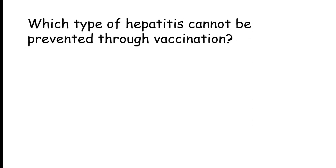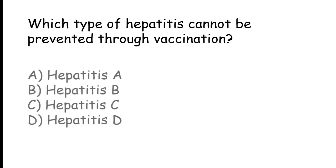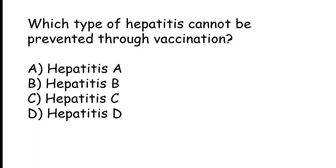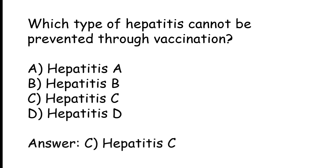Which type of hepatitis cannot be prevented through vaccination? Hepatitis A, Hepatitis B, Hepatitis C, or Hepatitis D. The correct answer is Option C. Hepatitis C cannot be prevented through vaccination.